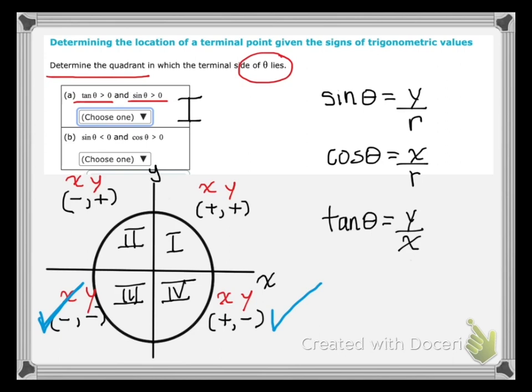Cosine theta is positive, or what if cosine theta is positive. So looking at our x, y, r definition, x would have to be positive for cosine theta to be positive. And x is positive in the first quadrant and the fourth quadrant. Both conditions have to be met. So theta, in this case, is in the fourth quadrant for part B.